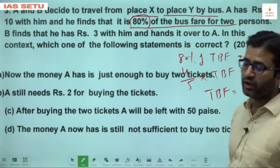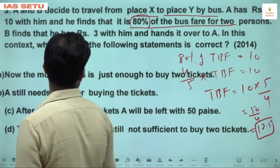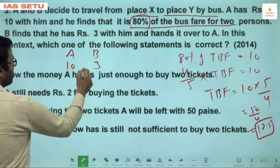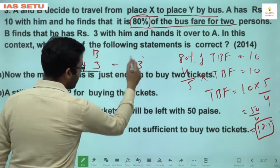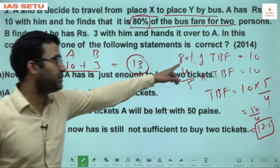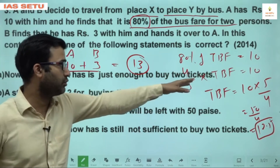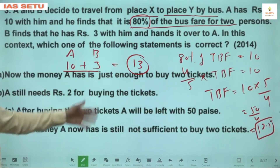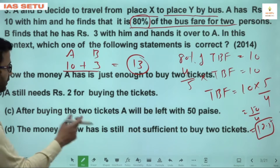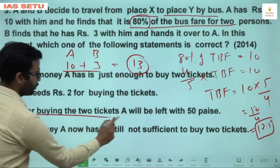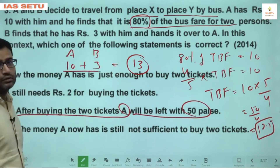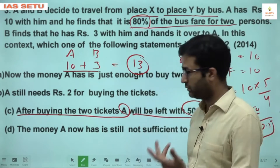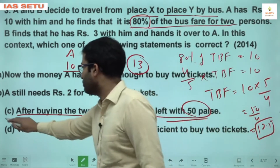They need Rs. 12.50 to travel, but A has only Rs. 10. B finds he has Rs. 3 and hands it over to A. So now A has Rs. 13. They need Rs. 12.50, they have Rs. 13 — so 50 paise will be left after buying 2 tickets. Answer is C.